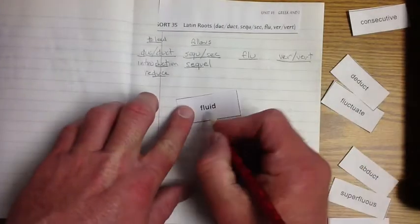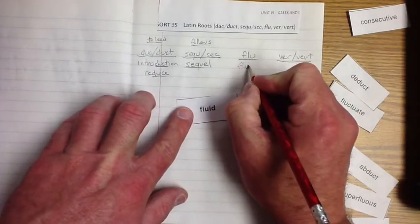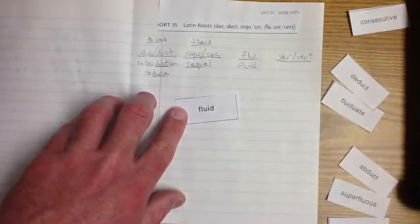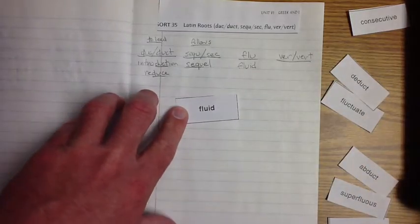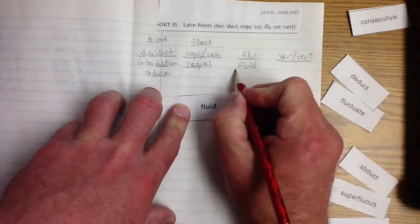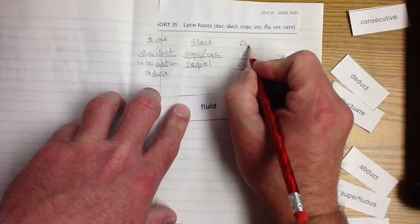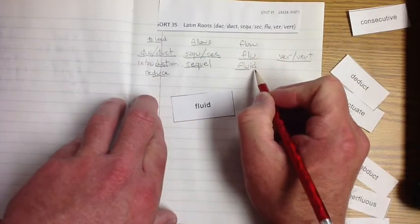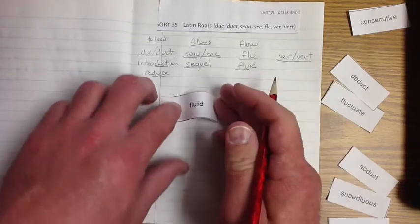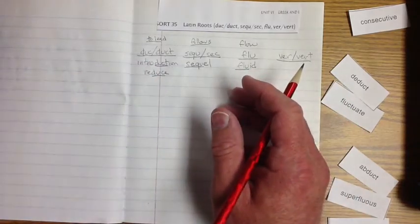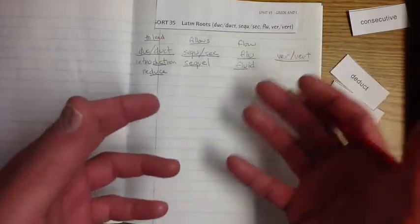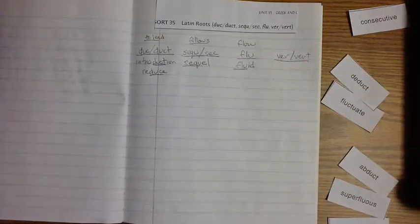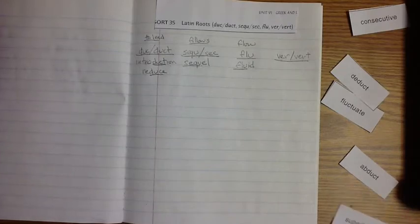Let's do our next one, flu, F-L-U-I-D, and fluid actually means to flow. So when it's flowing, it's fluid. It is flowing. So fluid is liquid, isn't it? So it's flowing. That's kind of cool.